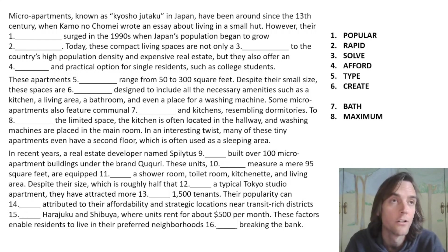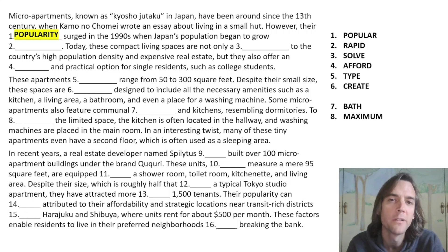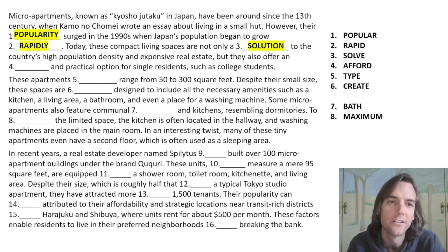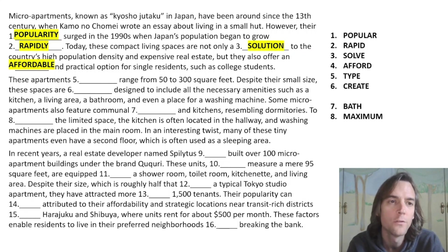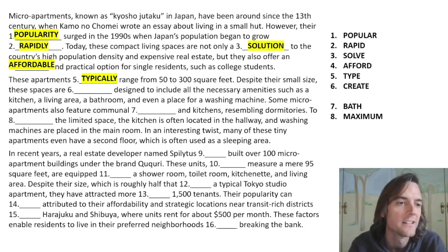I'll share the answers with you — hopefully you got them right or you've learned something to add to your notes. The first answer is 'popularity' — the popularity of something increased. 'Population' was not the answer, as the population was growing rapidly. They are a solution to 'population density' — dense becomes density. And they are 'affordable', meaning you can afford them; they are cheap or inexpensive.